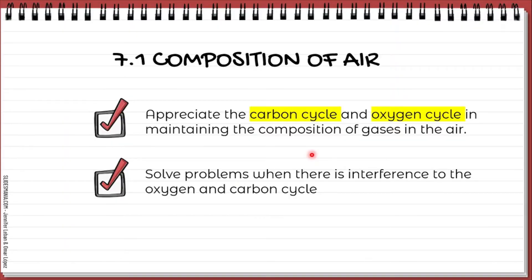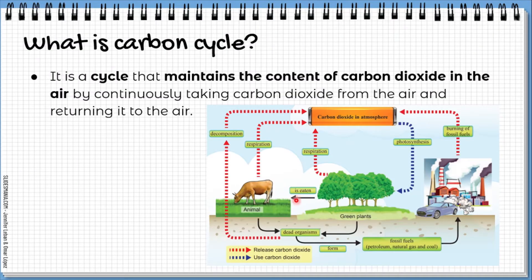So in this second part of Composition of Air, subtopic 7.1, we will learn about the carbon cycle and oxygen cycle. And then we will look at problems if there is interference — interference meaning gangguan — to the oxygen and carbon cycle. So without wasting our time, let us first look at the carbon cycle.